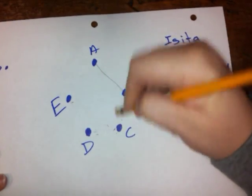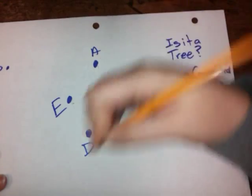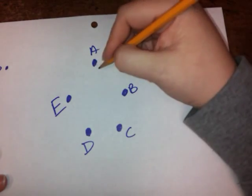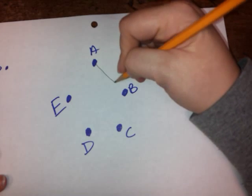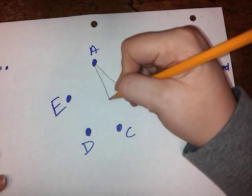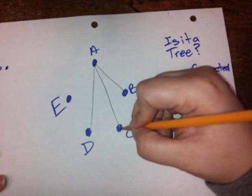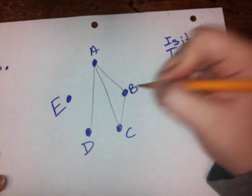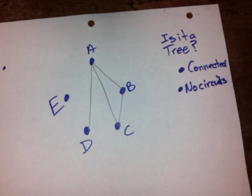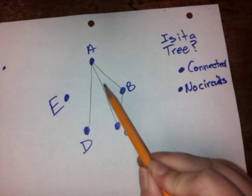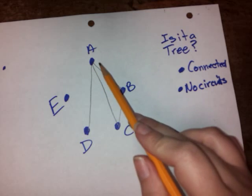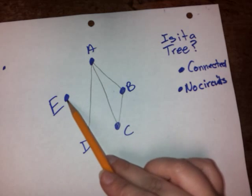Okay, well, let's see. What if I did one, two, three, four? There is a graph that has five vertices and four edges. It has a circuit. This A, B, C, A is a circuit. And it's also not connected. I've got E hanging out here all by itself. It's not connected to the rest of the graph.